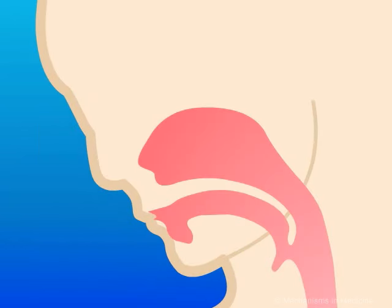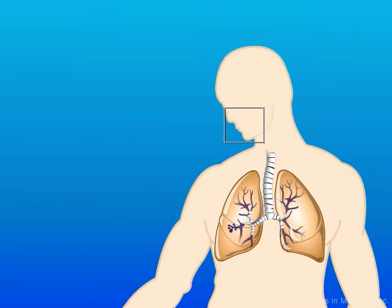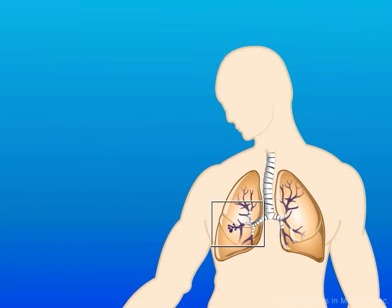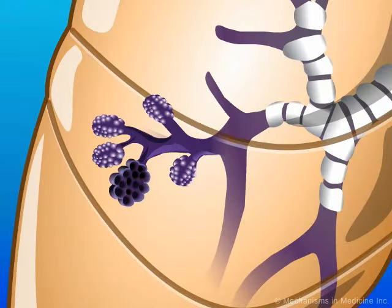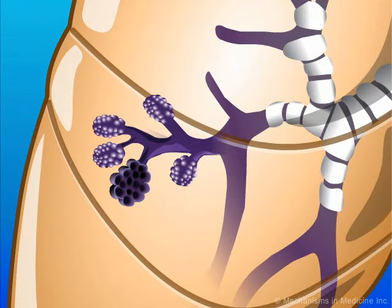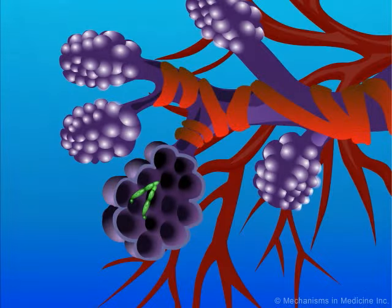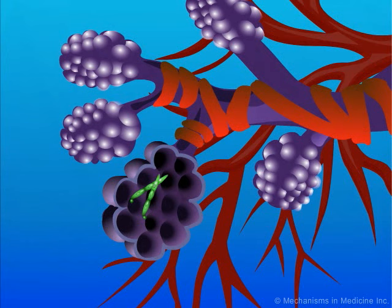In one of the classic forms of this disease, invasive pulmonary aspergillosis, the conidia are inhaled into the alveolar airspaces, where they germinate and become hyphae with invasion into pulmonary vessels.